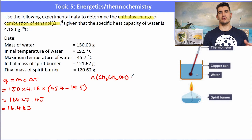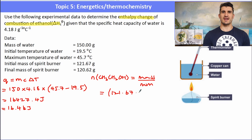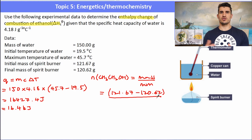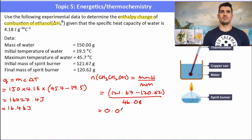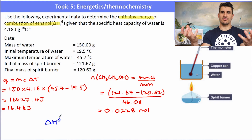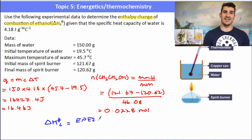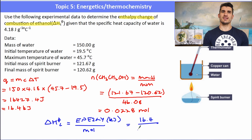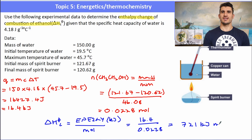Now find the number of moles of ethanol — formula CH₃CH₂OH, check topic 10 if needed. The mass is the change in mass of the spirit burner. Dividing by the molar mass gives 0.0228 moles. ΔH of combustion = energy ÷ moles — remember energy must be in kilojoules. This gives ΔH = 721 kJ/mol. Since this is an exothermic reaction — it released energy — we put a negative sign in front: −721 kJ/mol. Don't forget that tiny step.